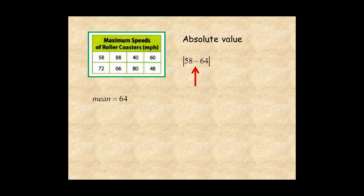So the absolute value of 58 minus 64 is 64 minus 58, which is 6. So instead of 58 minus 64, it's 64 minus 58.